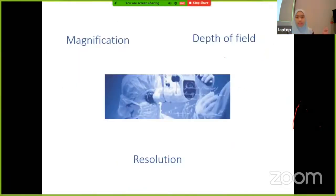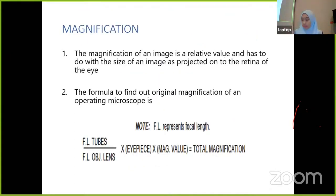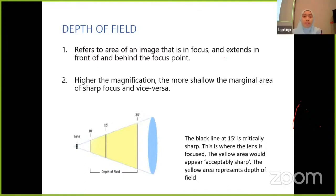I will now talk briefly about magnification, depth of field, and resolution of the operating microscope. Magnification of an image is a relative value and relates to the size of the image as projected onto the retina of the eye. The formula is: focal length of the tube divided by focal length of the objective lens, multiplied by the eyepiece magnification value — giving us the total magnification. Depth of field refers to the area of an image that is in focus and extends in front of and behind the focal point. The higher the magnification, the more shallow the area of sharp focus, and vice versa.